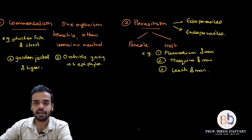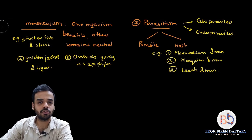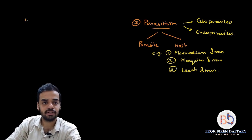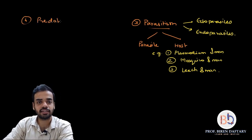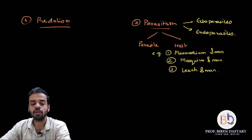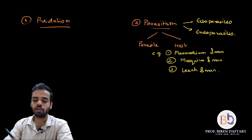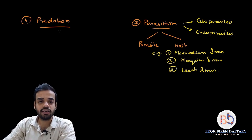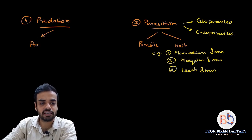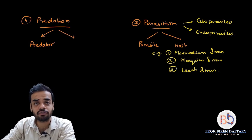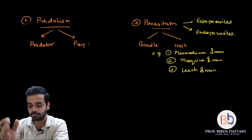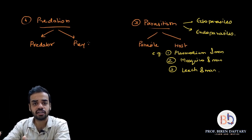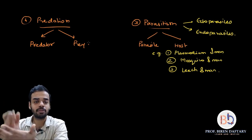Now we come to the last type of interaction: predation. Predation is again an interaction in which one organism is benefited and the other is harmed, but in predation one of the organisms is normally killed — predation results in the death of an organism while the other gets nutrition. The organism that gets benefited is called the predator, and the organism that gets killed or harmed is called the prey.